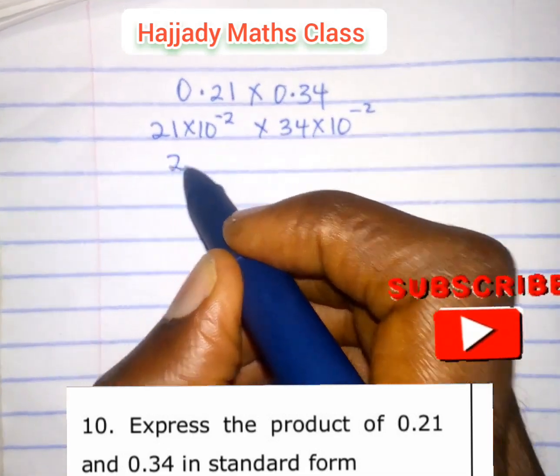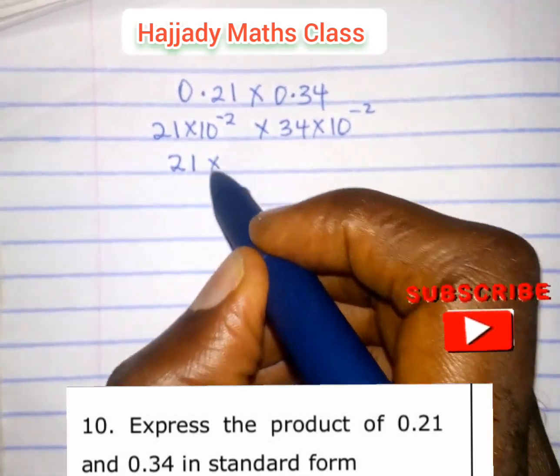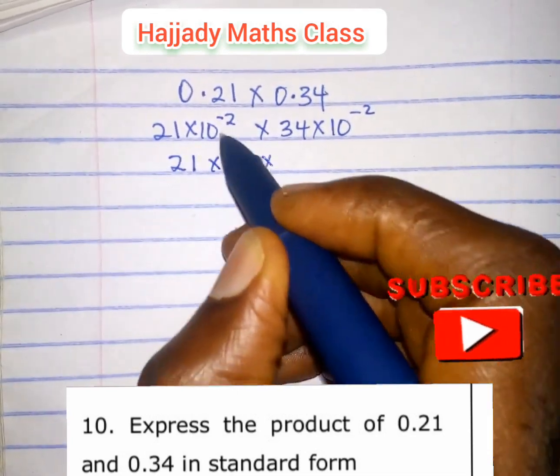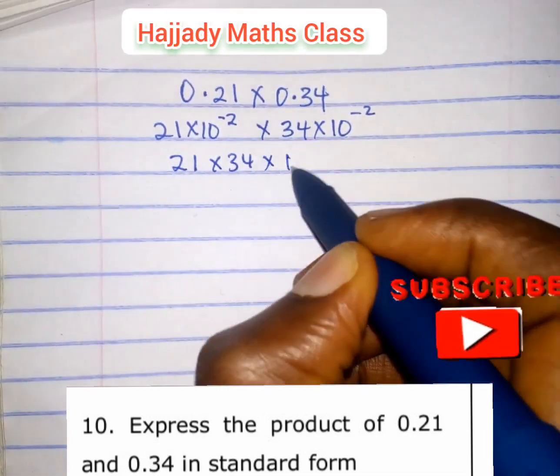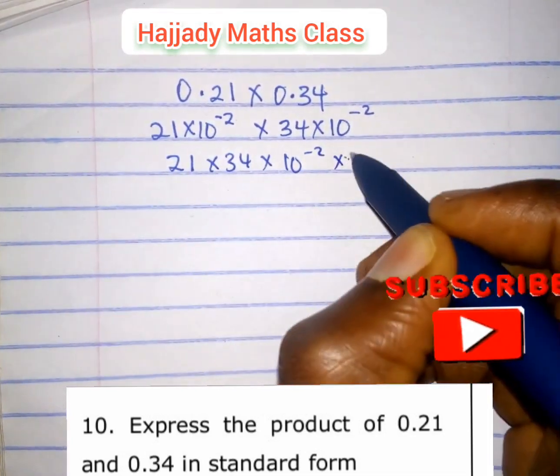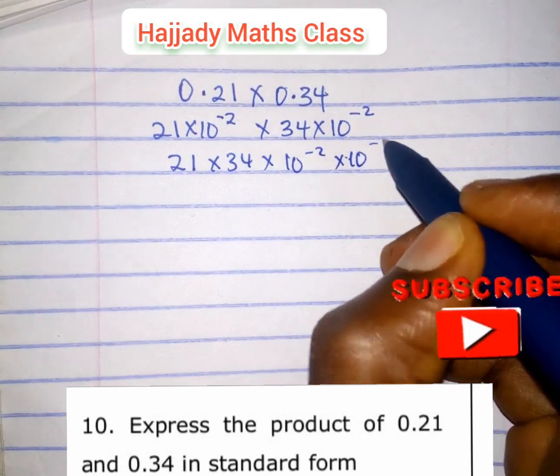Multiplying this separately, we have 21 times 34 times 10 raised to the power minus 2 times 10 raised to the power minus 2.